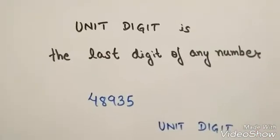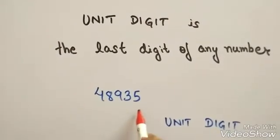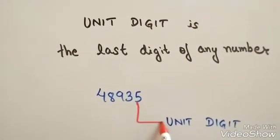Unit digit is the last digit of any number. For example, in 48935, 5 is the unit digit.